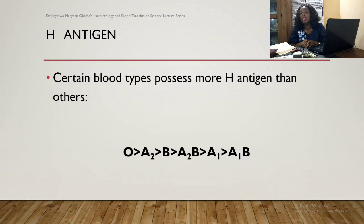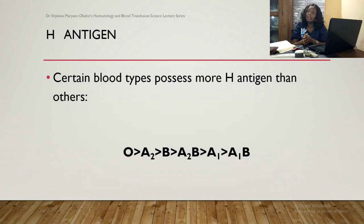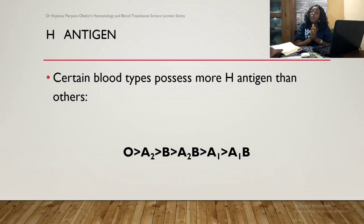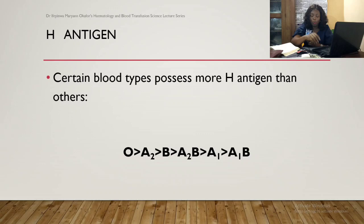There is another scenario where an individual cannot produce fucosyl transferase, galactosyl transferase, or N-acetylgalactosaminyltransferase — in that case another outcome occurs and the person becomes what we call the Bombay blood group. But if an individual can produce fucosyl transferase yet cannot produce galactosyl transferase or N-acetylgalactosaminyltransferase, the individual becomes blood group O.